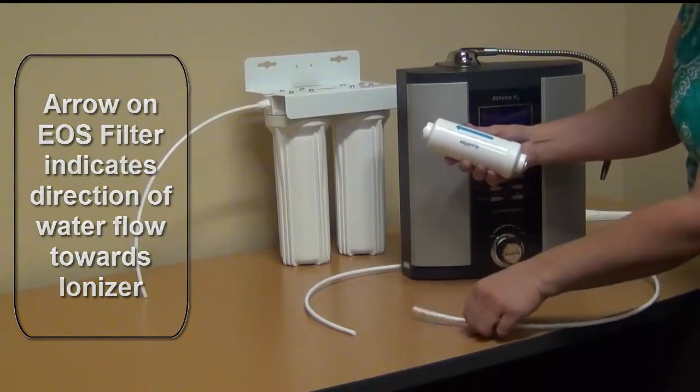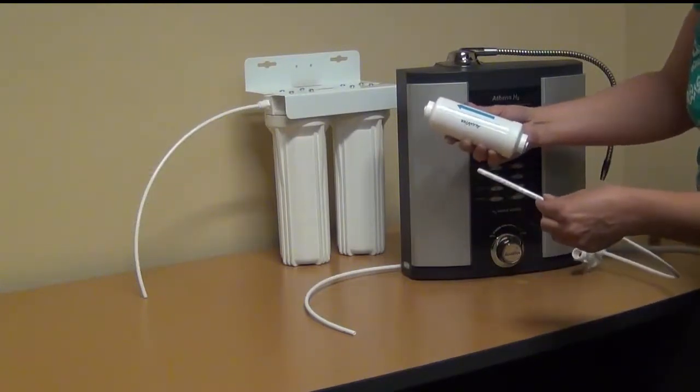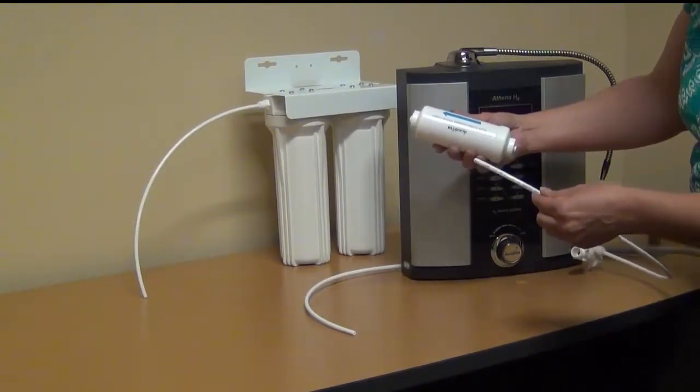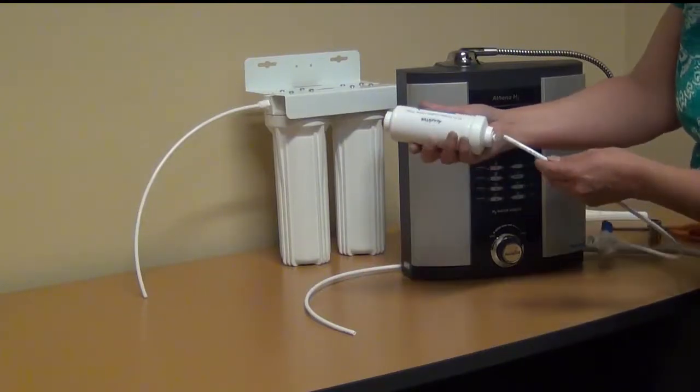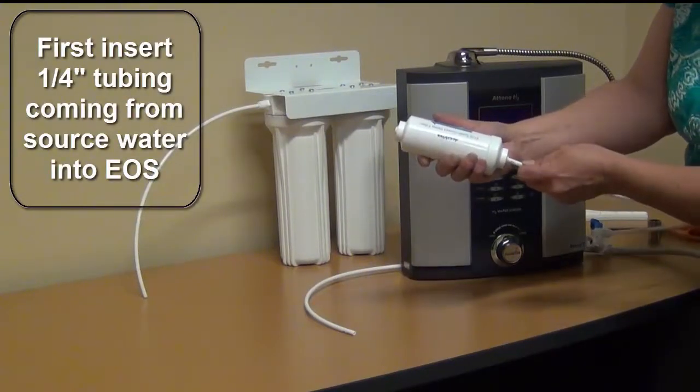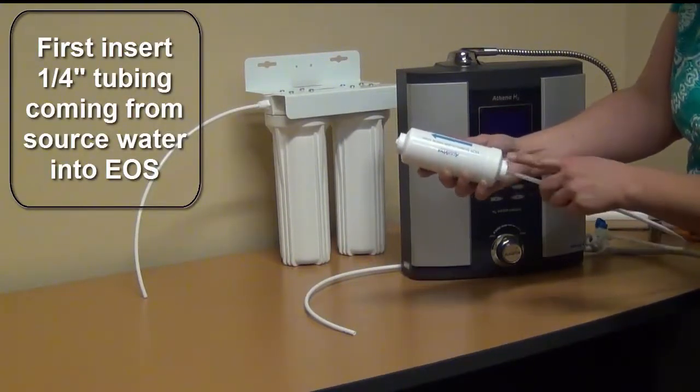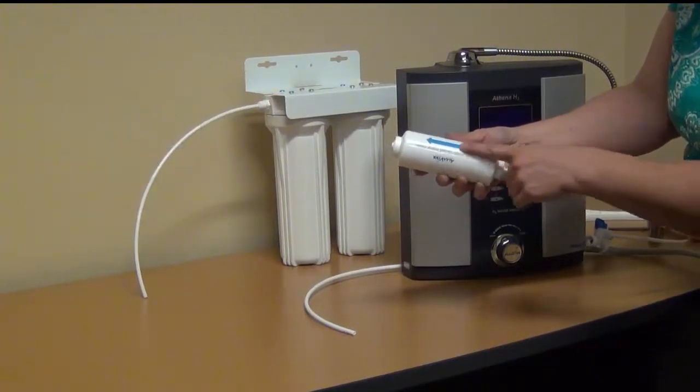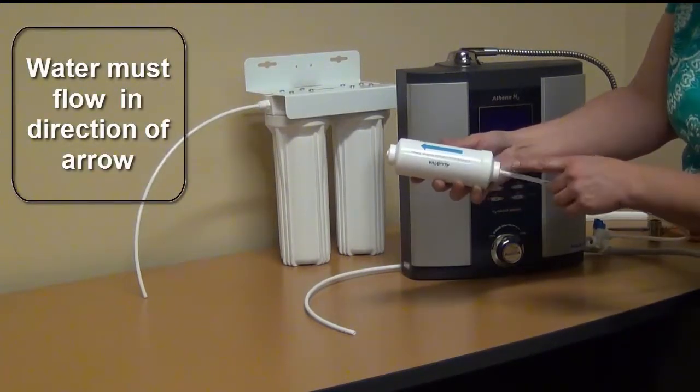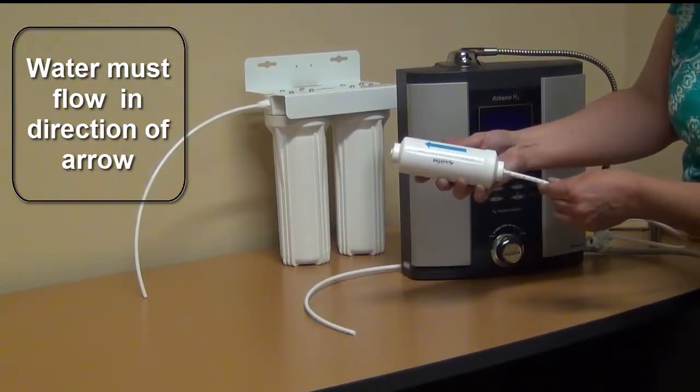So in this case, this is our tube coming from the cold water line, coming from the source water. So we will insert this end of the tube into the EOS in the direction of the arrow. This is the water coming into the EOS filter.